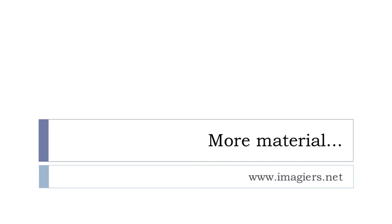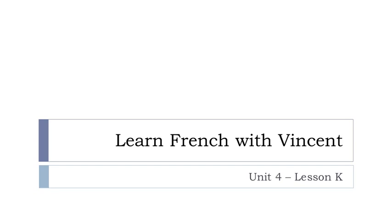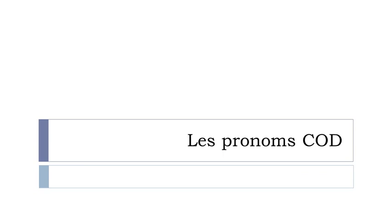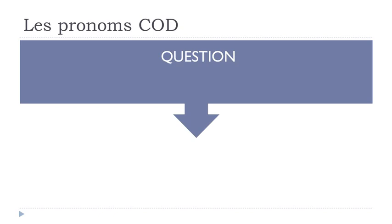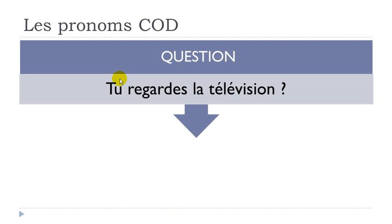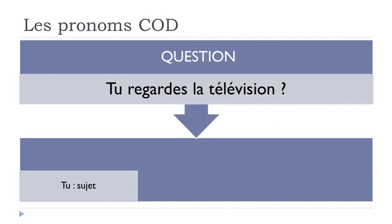Bonjour à tous, hi everyone and welcome to Learn French with Vincent. This is Unité 4, Leçon K. In this lesson we'll discover les pronoms COD — no stress, but it will be quite important. We'll take first a sentence: TU REGARDES LA TÉLÉVISION. Regarder is 'to watch.' So if we analyze this question, the first element is TU (subject), second is REGARDES (verb), and the third is LA TÉLÉVISION — which we call complément. It's a grammatical object, and it's direct because there's no preposition between the verb and this complément.